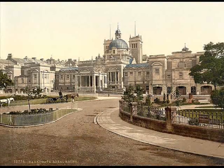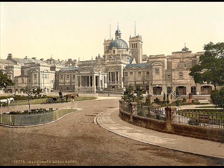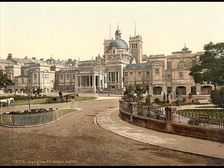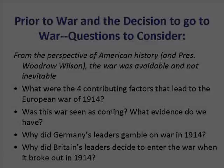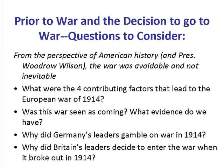A looming factor in the inevitability of war between the two superpowers, Britain and Germany, stood on who would reign supreme on the high seas, be the military power, and who would possess the most colonies, making the nations wealthy and powerful. Consider the following four topics as contributing to the rise of conflict between European nations.